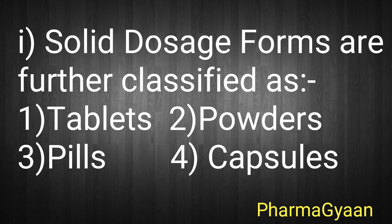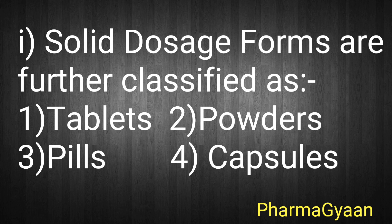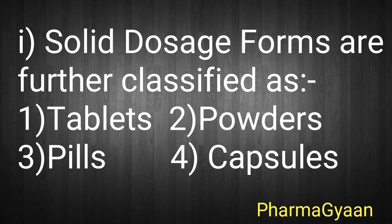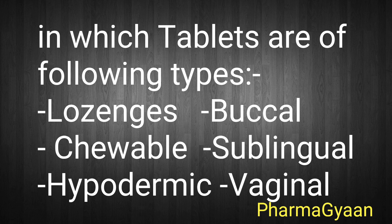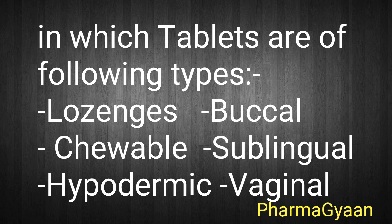Solid dosage forms are further classified as tablets, powders, pills, and capsules. Capsules are further classified as hard gelatin capsules and soft gelatin capsules. Tablets are of the following types: lozenges, buccal, chewable, sublingual, hypodermic, and vaginal.